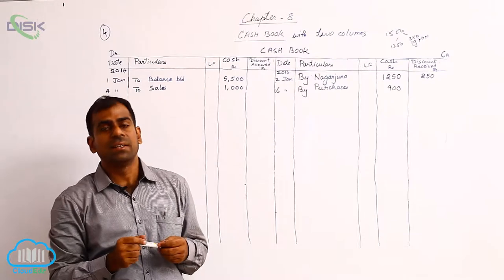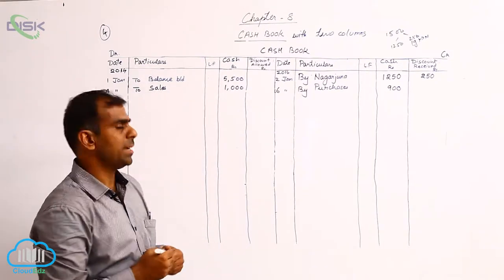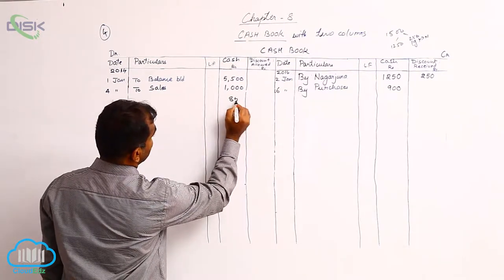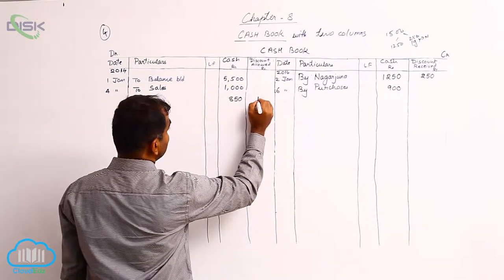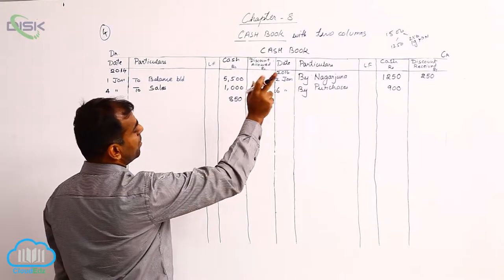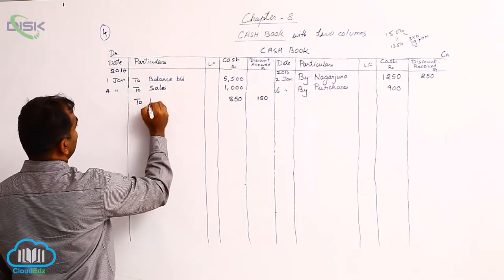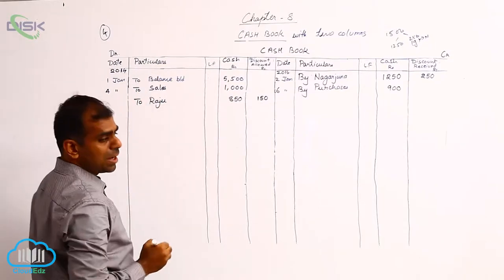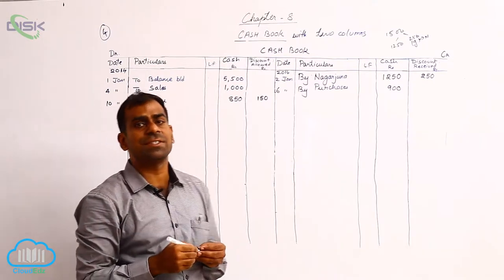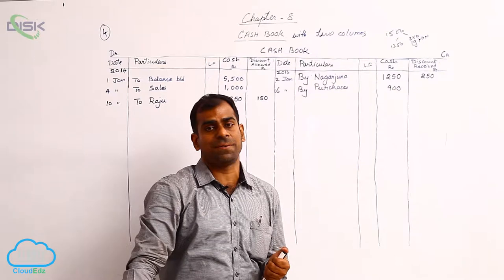On 10th January, received cash from Rajoo 850, discount allowed 150. It is a receipt, so record it on the debit side — enter 850 in the cash column. The 150 discount allowed means you are losing this amount, so it is a loss. Based on the rule of nominal accounts, debit 150 as discount allowed. Record the name Rajoo in the particulars column, date being 10th January.